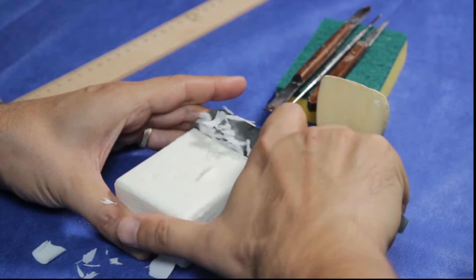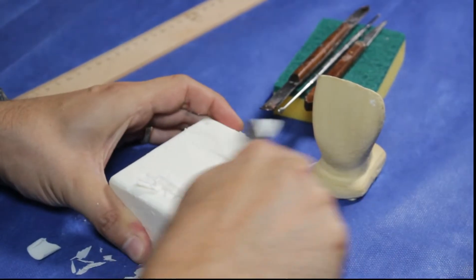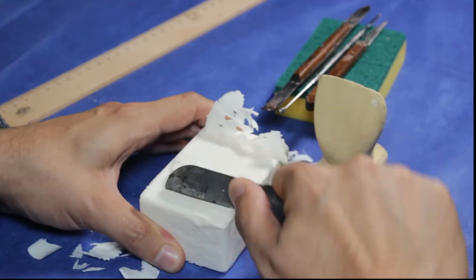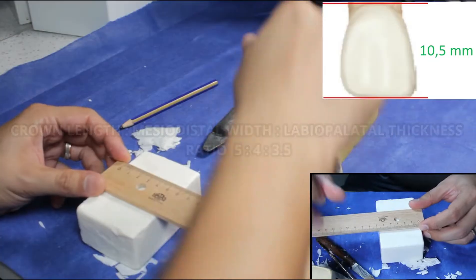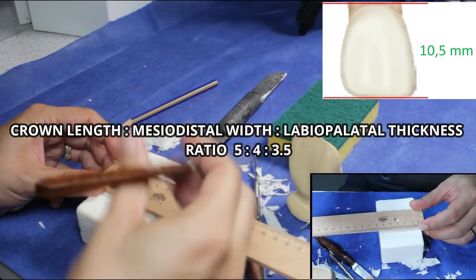We have to get rid of the superficial layer of the soap with a plaster knife. Then we have to measure each dimension and mark them.